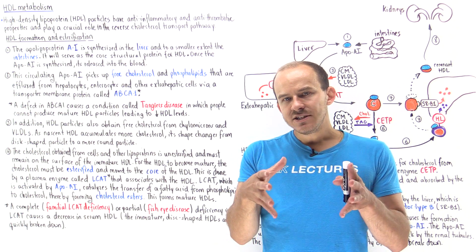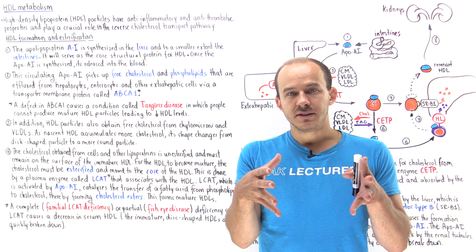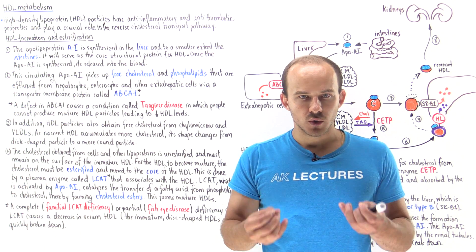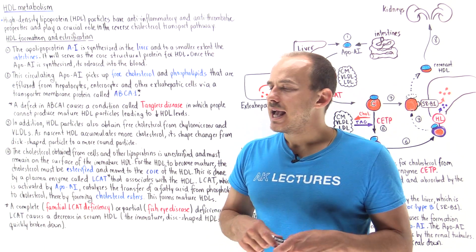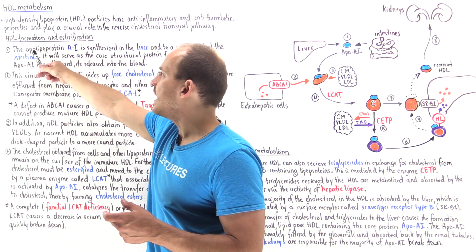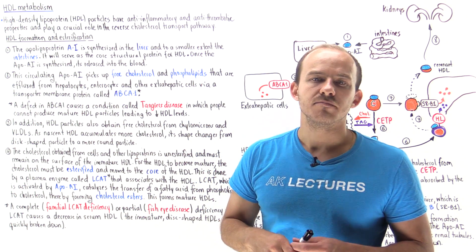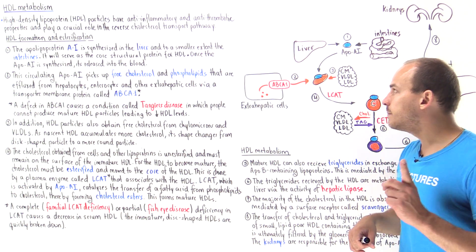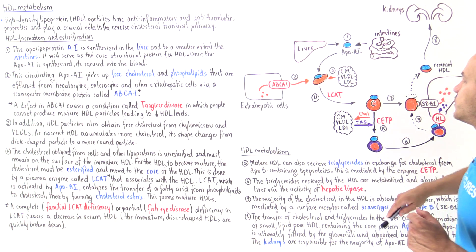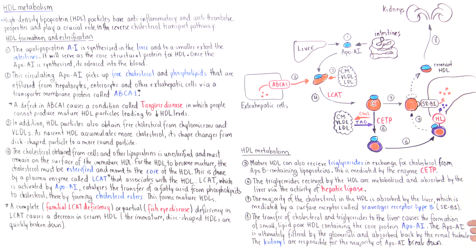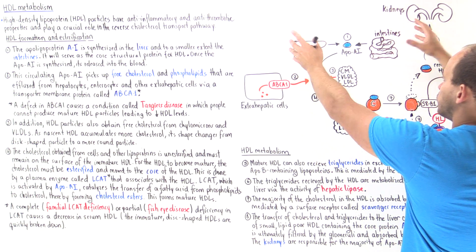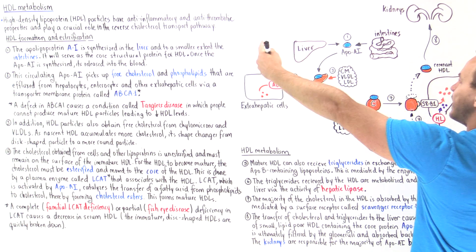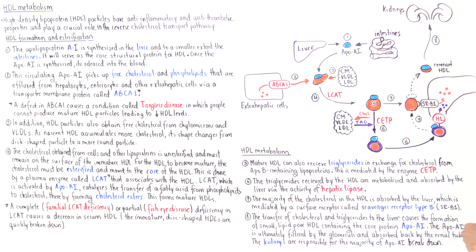For an HDL molecule to actually be able to exist, it has to have an important core protein — a structural protein. This structural protein is known as apolipoprotein A1. Apolipoprotein A1 is predominantly produced in the liver and, to a smaller extent, our intestine. The intestines and liver produce apolipoprotein A1 and release it into the circulation.